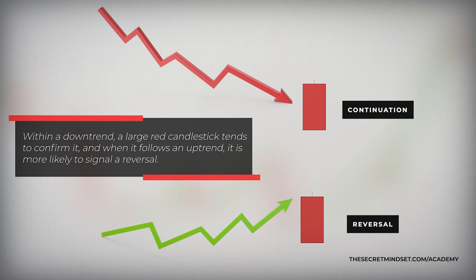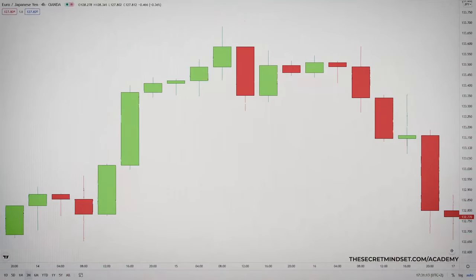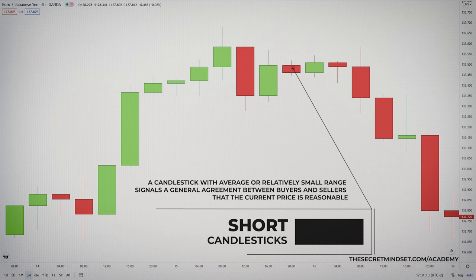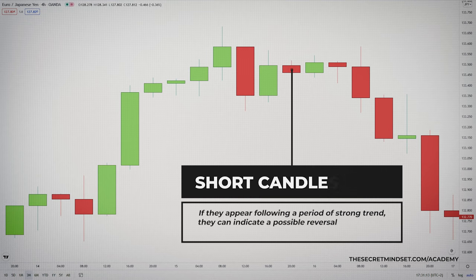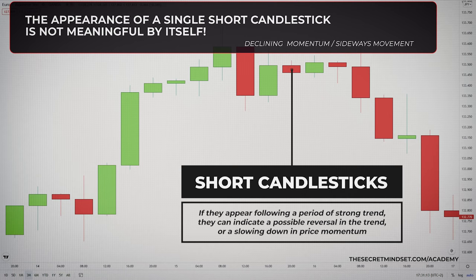Within a downtrend, a long red candlestick tends to confirm it. And when it follows an uptrend, it's more likely to signal a reversal. A candlestick with average or relatively small range signals a general agreement between buyers and sellers that the current price is reasonable, especially when short candlesticks appear in a series of sideways moving sessions. However, when short candlesticks appear following a period of strong trend in either direction, especially when long candlesticks have shown up, they can indicate a struggle between buyers and sellers and a likely reversal in the trend or a slowing down in price momentum. The appearance of a single short candlestick is not meaningful by itself. When a series of short candlesticks appear, it may show declining momentum in the current trend or be a symptom of sideways movement.